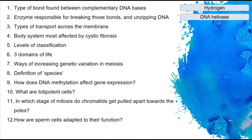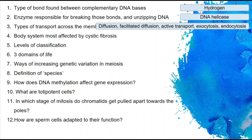Three. The types of transport across the membrane are diffusion and facilitated diffusion, both of which are passive and do not require energy. Then you've got active transport, exocytosis, and endocytosis, which all do require energy. The body system most affected by cystic fibrosis is the respiratory system, but the other two are the reproductive system and the digestive.